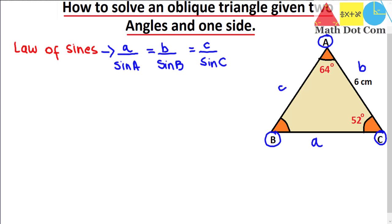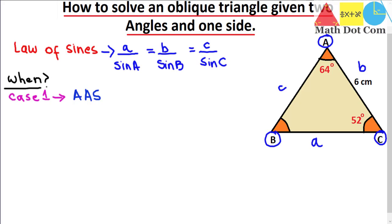Now let's see when you can use the law of sines — how will you know that you have to use it? There are two cases. Case number one is when you are given with two angles and one side, then you can use the law of sines. This is either angle-angle-side (AAS) or angle-side-angle (ASA) form.